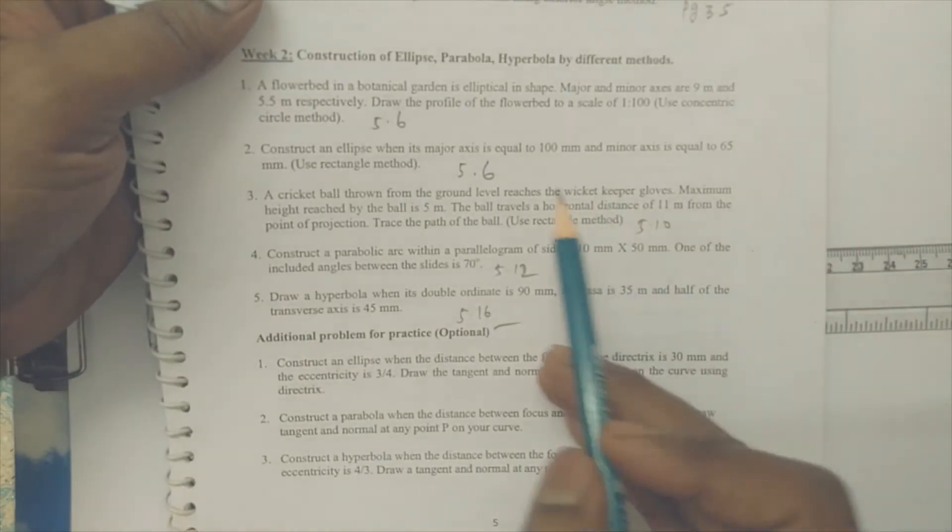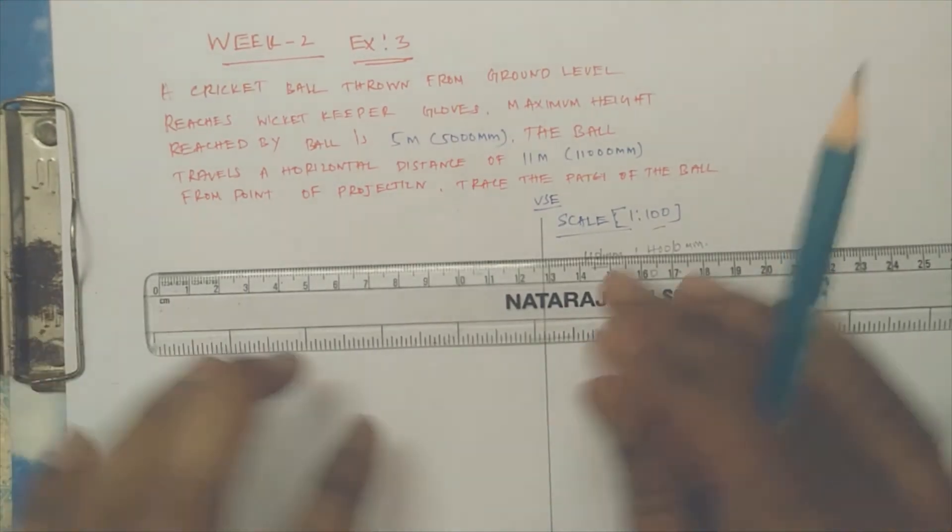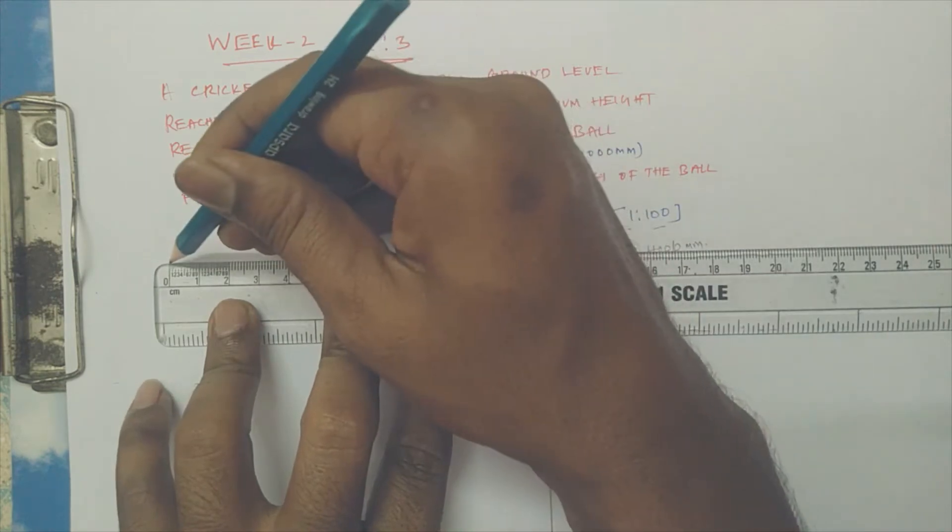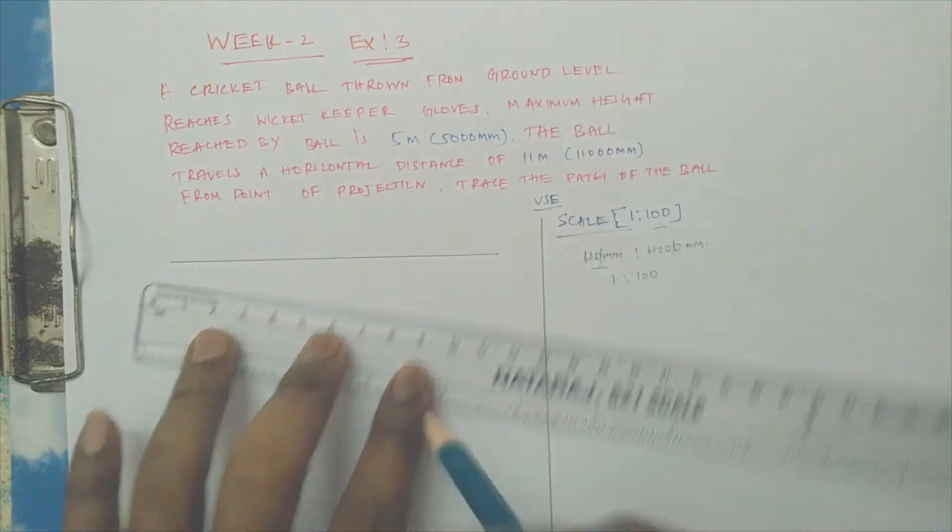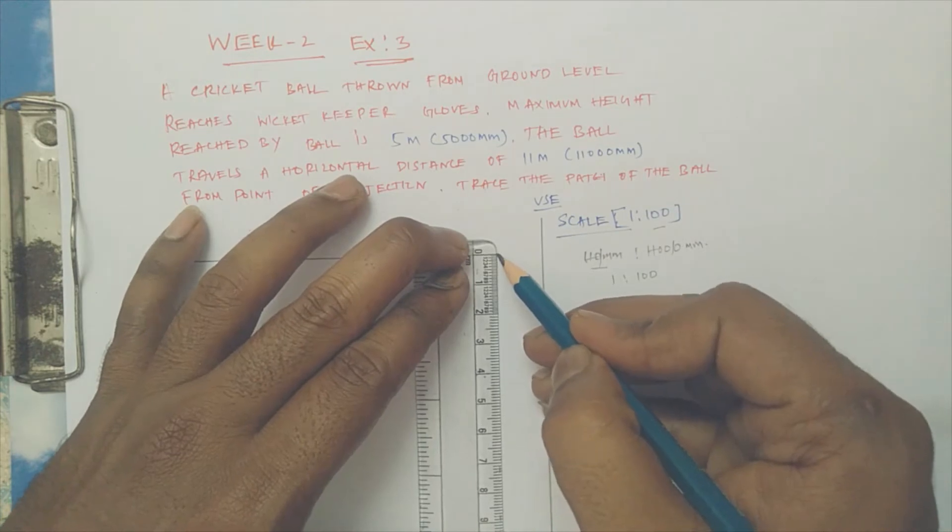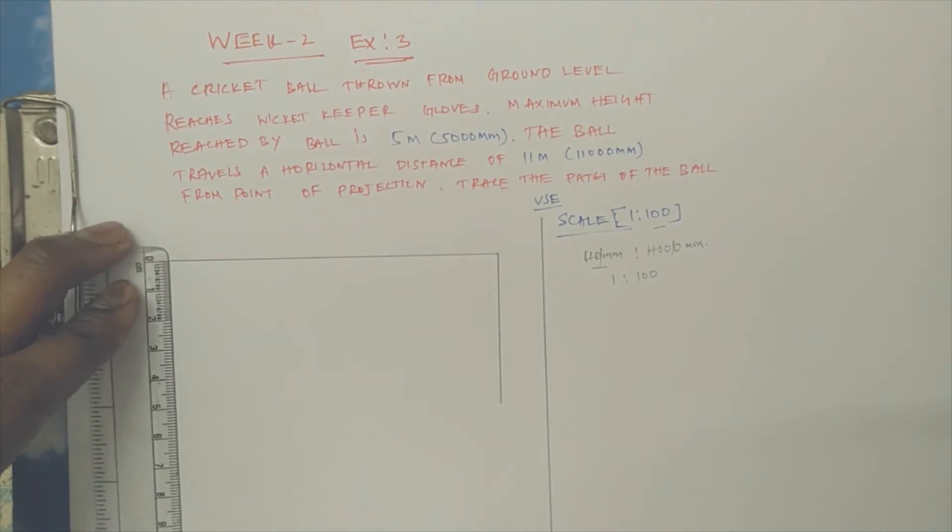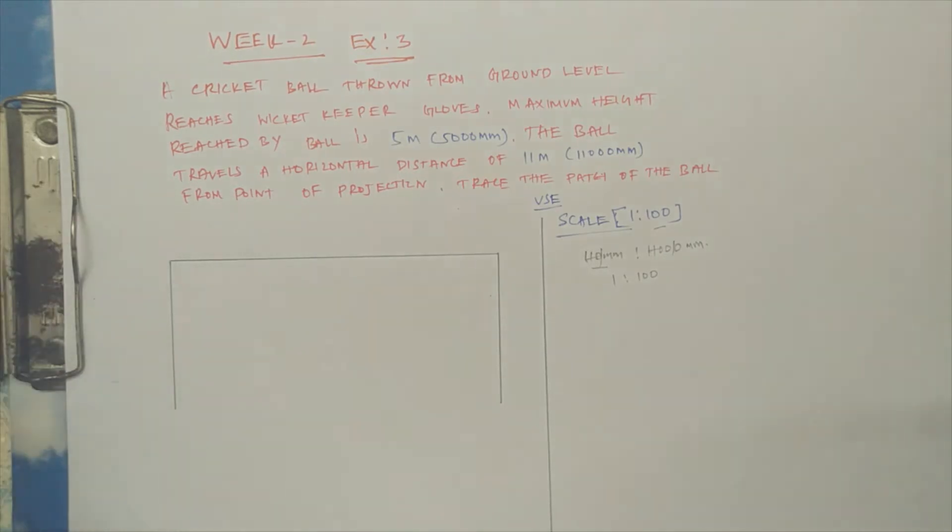If you've seen your manual, there is a rectangle method. Let us draw the rectangle for 11 centimeters horizontally.